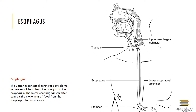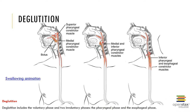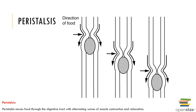The movement of food from the oral cavity into the pharynx and then into the esophagus is called swallowing, and is divided into three phases: the buccal phase, the pharyngeal phase, and the esophageal phase. The buccal phase is voluntary, while the pharyngeal and esophageal phases are involuntary. Peristalsis moves food through the digestive tract with alternating waves of muscle contraction and relaxation.